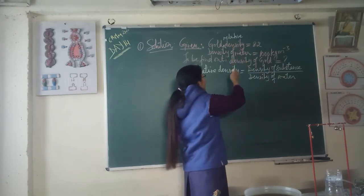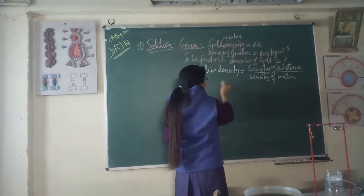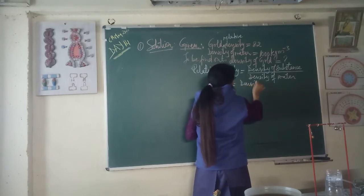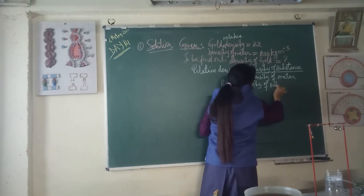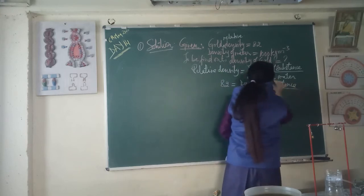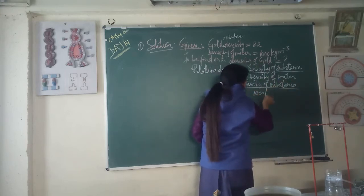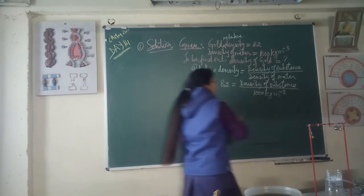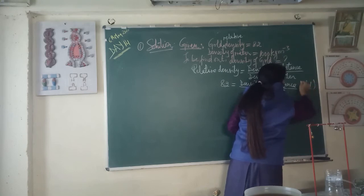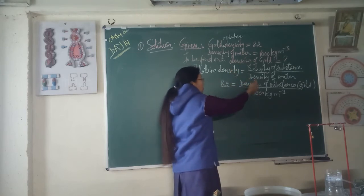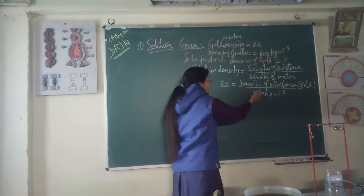Gold has a relative density of 8.2. That is: density of substance — which is gold — divided by density of water, which is 1000 kg per meter cubed. The unknown is the density of gold, so we rearrange using the division formula by multiplying both sides.